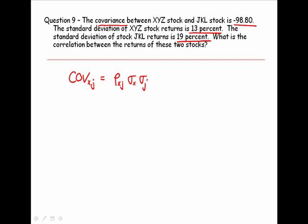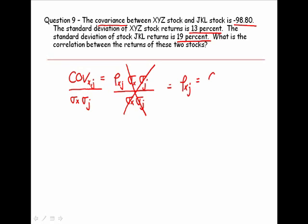Now we have an equality — the left side equals the right side. I'm solving for the correlation. So if I divide the right-hand side by sigma X times sigma J, and the left-hand side by the same — sigma X times sigma J — you can see that on the right-hand side of the equation some of these variables cancel out. What we're left with is that the correlation between XYZ and JKL is equal to the covariance divided by the product of their standard deviations.